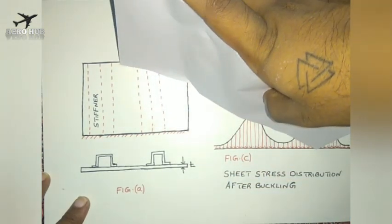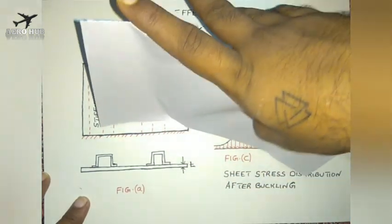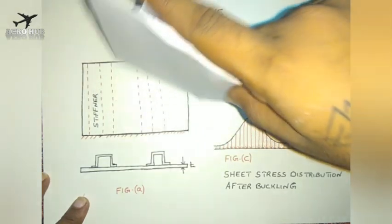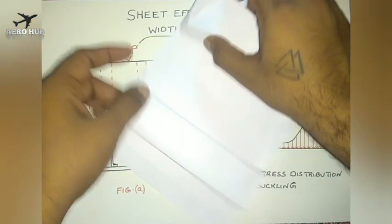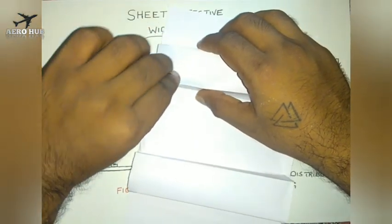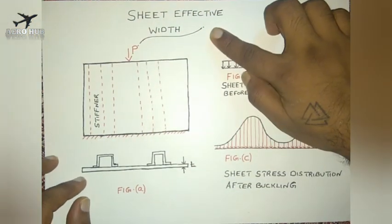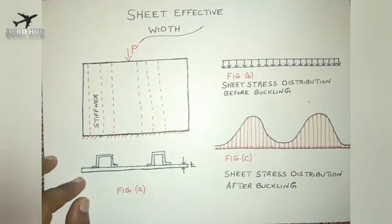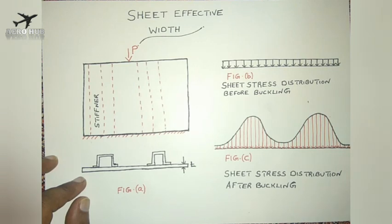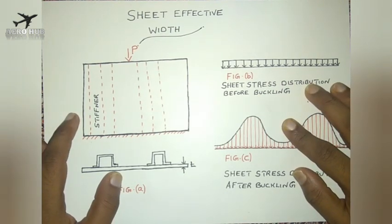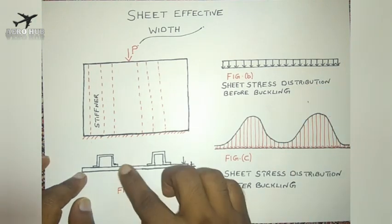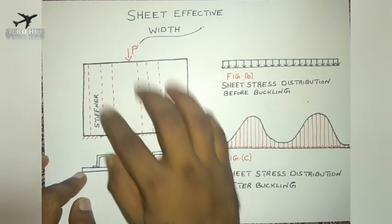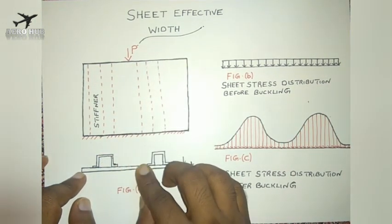You can see here that this entire assembly is getting buckled. But due to the presence of the stiffeners, the entire assembly can be stabilized. The same case is explained here — we have a thin plate of thickness T and two hat sections. This is the side view and this is the top view.